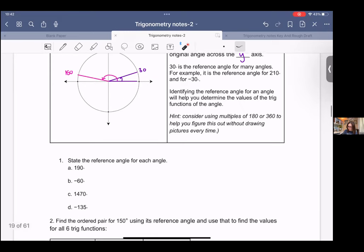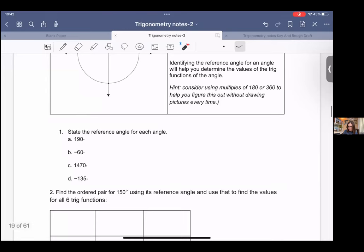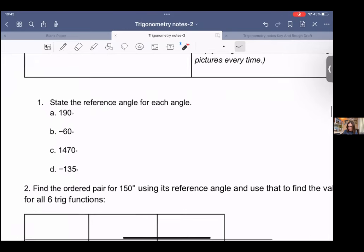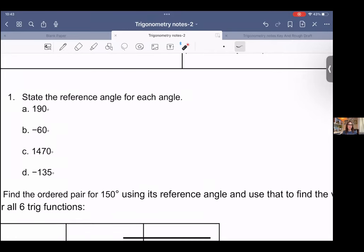With these examples down here, we're going to find a reference angle for them. What you're doing is adding or subtracting multiples of 180 or 360, depending on the angle. And if you need to, sometimes it helps to just draw a picture to figure out where that is.